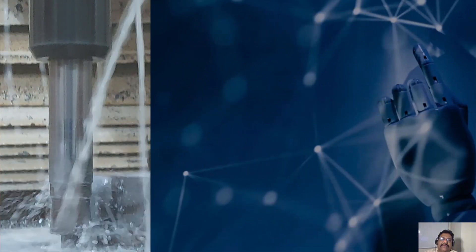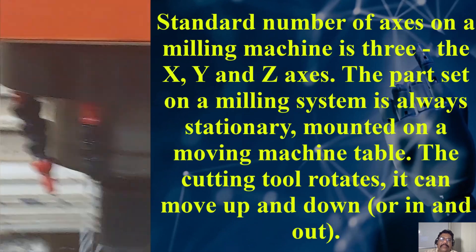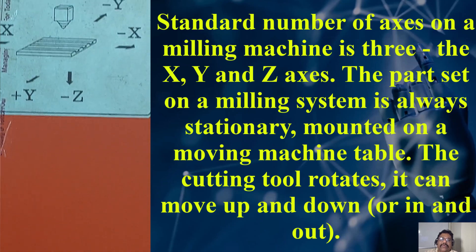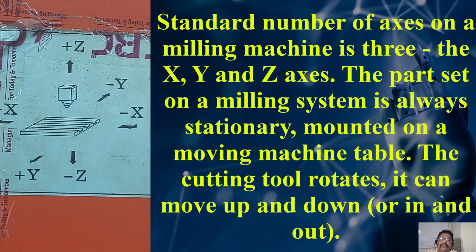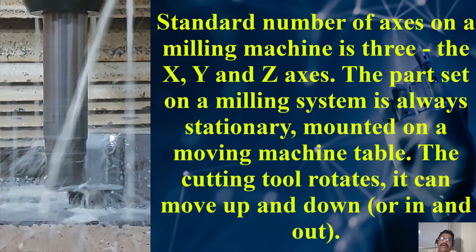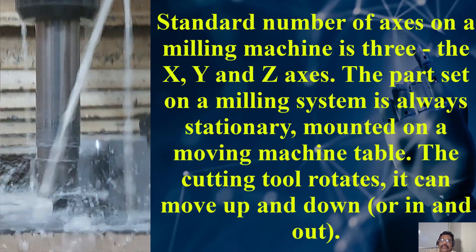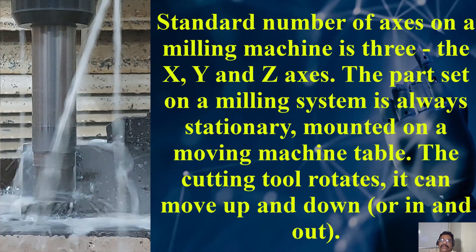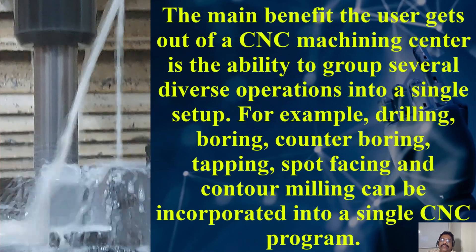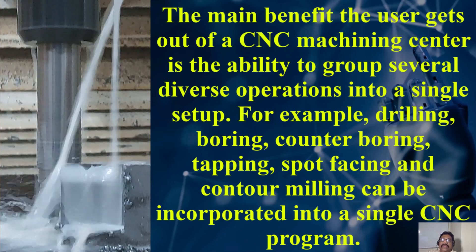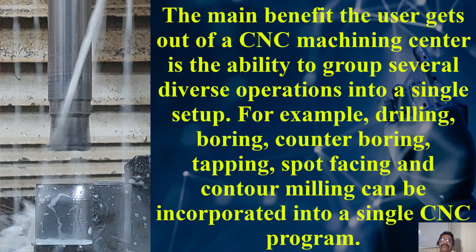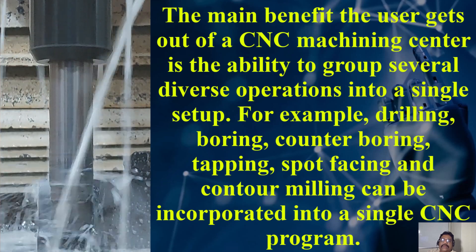Mills and machining centers: the standard number of axes on a milling machine is 3 — the X, Y, and Z axes. The part set on a milling system is always stationary, mounted on a moving machine table. The cutting tools rotate and can move up and down or in and out. In industry, they are used for tool room work or small part production, and are usually designed for contouring. CNC machining centers are far more popular and efficient, mainly for their flexibility. The main benefit is the ability to group several diverse operations into a single step — for example, drilling, boring, counter boring, tapping, spot facing, and contour milling can all be incorporated into a single CNC program.